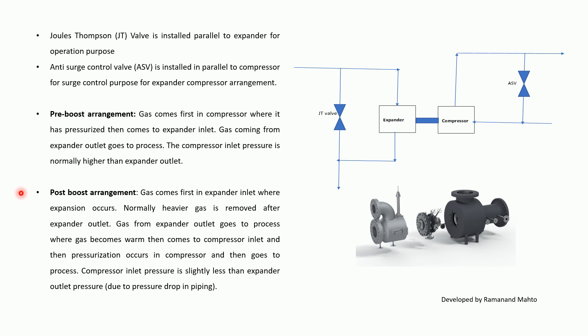In the Post-Boost arrangement, gas comes first to the Expander Inlet where expansion occurs — normally heavier gas is removed after the Expander Outlet. Gas from the Expander Outlet goes to the process where gas becomes warm, then comes to the Compressor Inlet, and pressurization occurs in the Compressor. Compressor inlet pressure is slightly less than Expander outlet pressure due to pressure drop in piping. The plant is initially started on the JT valve, and once the expander is started, load is slowly transferred from the JT valve to the expander.